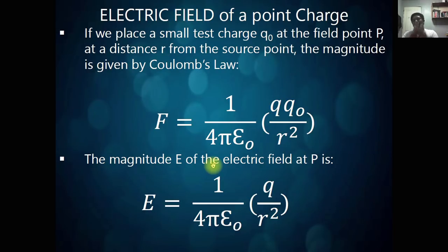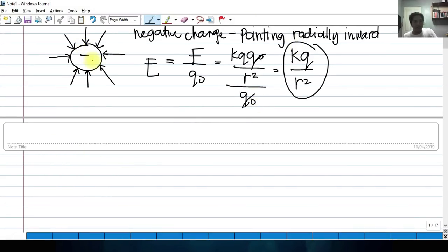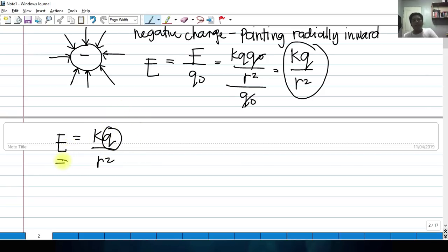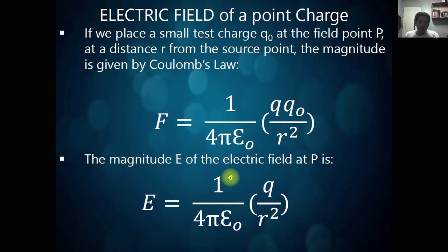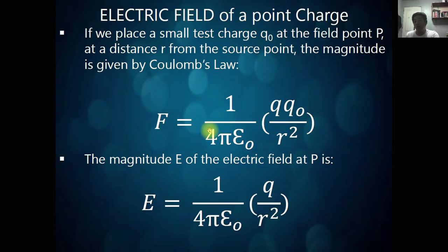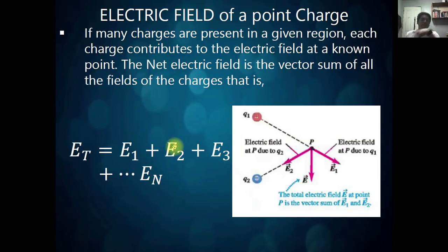Electric field of a point charge: electric field can be produced by a single point charge using the equation E equals KQ over R squared — we only require one charge Q to establish an electric field. The force by Coulomb's law is given by this formula, and the magnitude of E at point P is derived accordingly. Note that 1 over 4π epsilon sub 0 is equivalent to the Coulomb's constant.